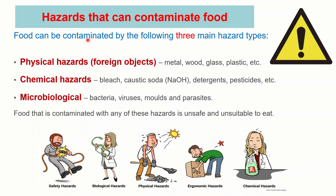There are some hazards that can contaminate food, and these hazards are mainly of three types. The first are physical hazards, which are foreign objects — for example, glass, plastic, etc. If these come into contact with food, they are physical hazards which contaminate food.